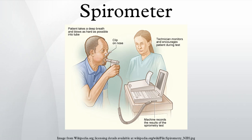The earliest attempts at measuring lung volumes date back to the period 129 to 200 A.D. Claudius Galen, who was a Roman doctor and philosopher, first performed a volumetric experiment on human ventilation. He had a boy breathe in and out of a bladder and found that the volume did not change. The experiment proved inconclusive.